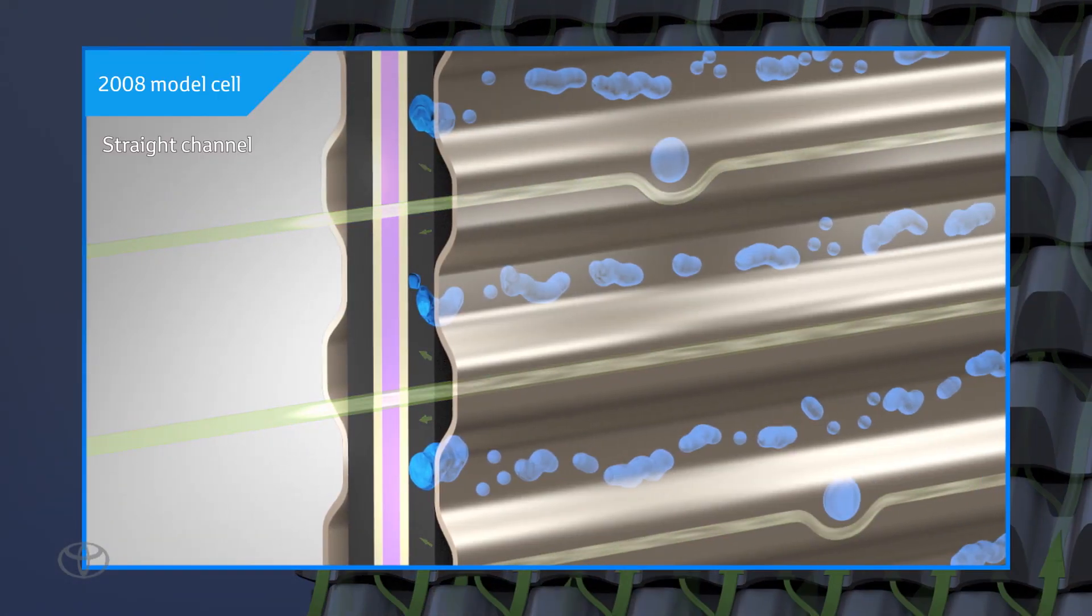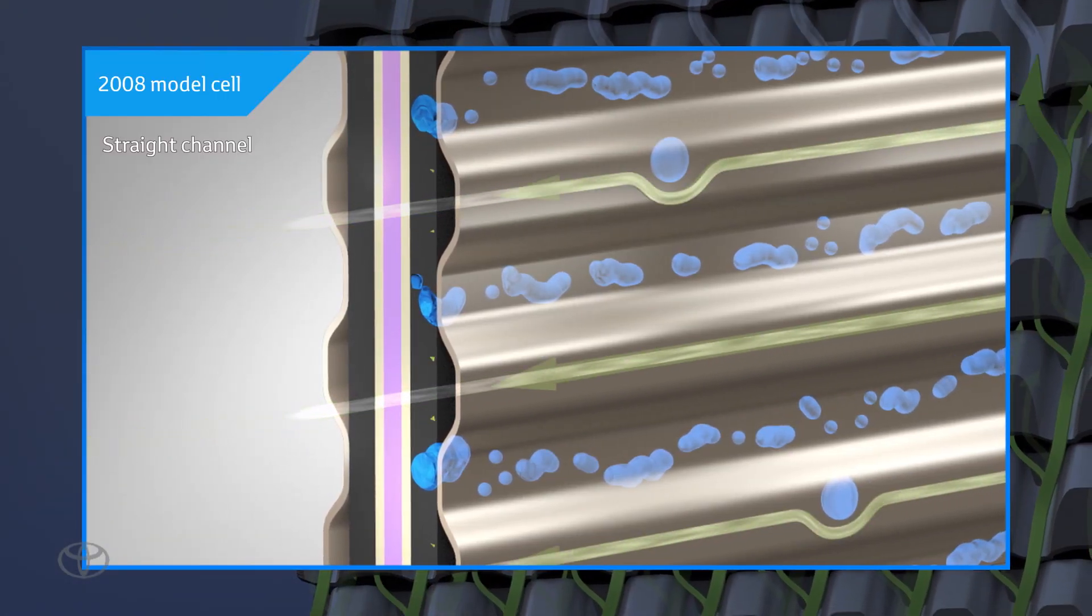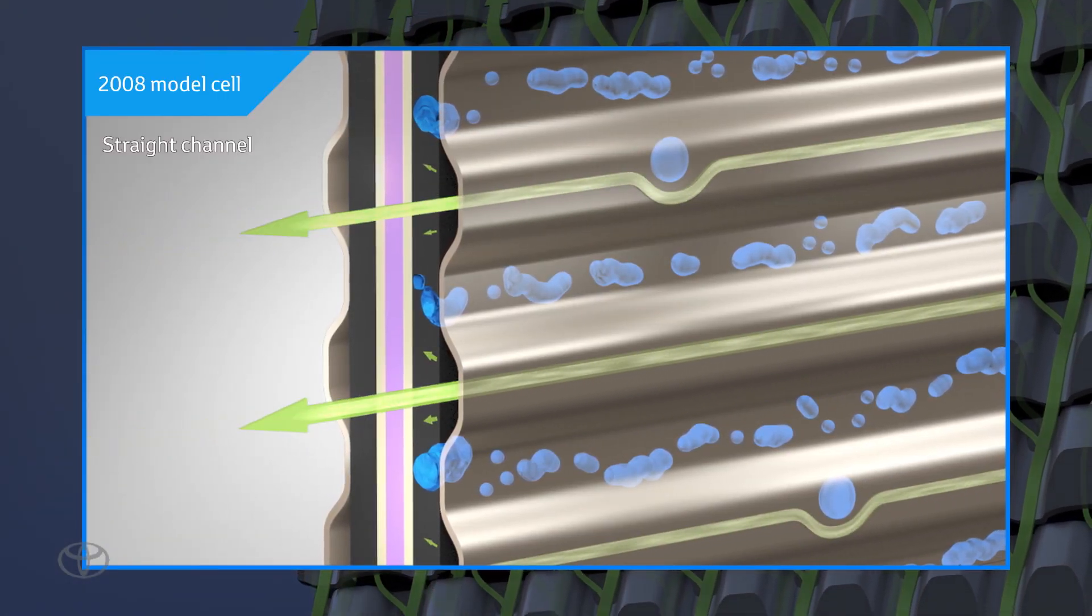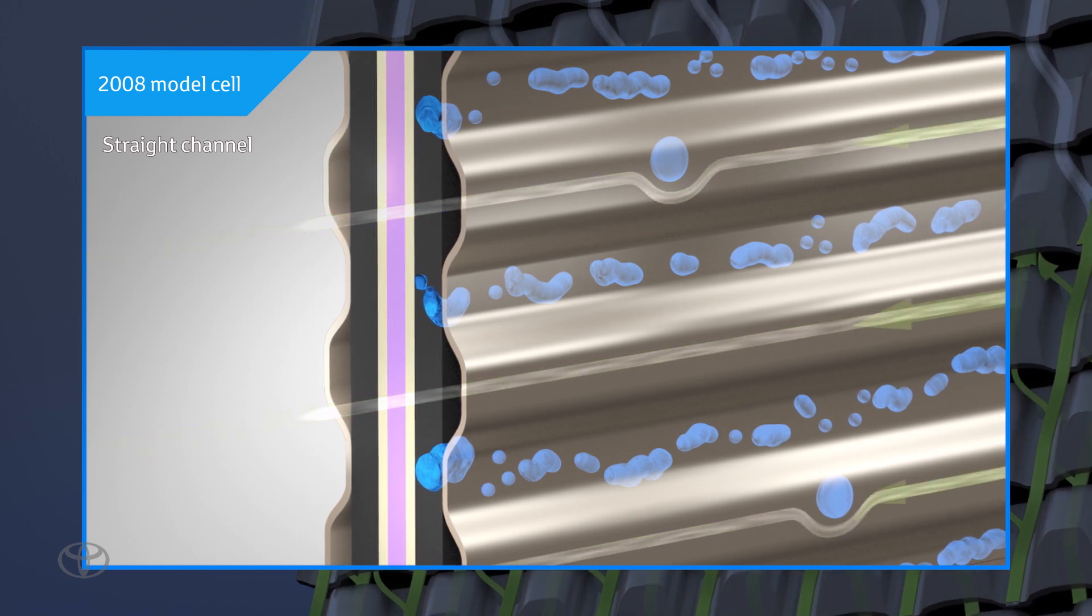With conventional straight channels, some of the generated water can accumulate easily within the cells, inhibiting electricity generation.